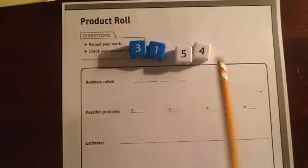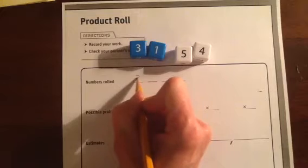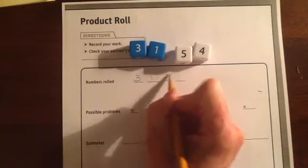To play, students roll the number cubes and record what they rolled. So we'll have a three, a one, a five, and a four.